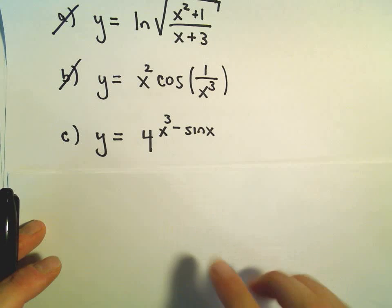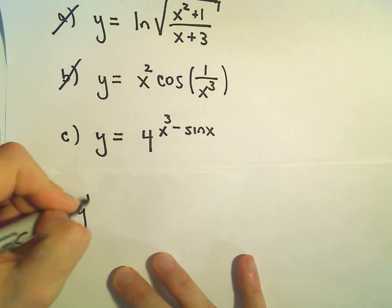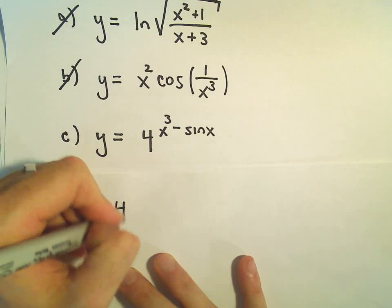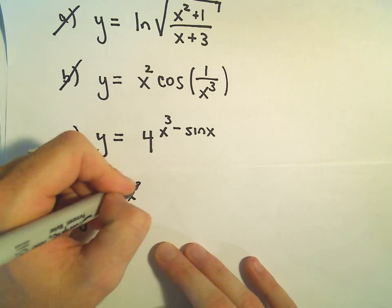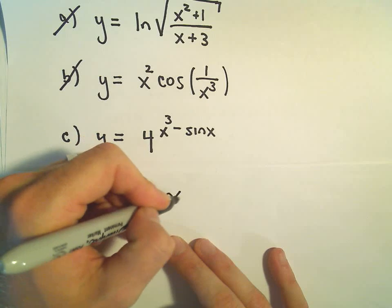So here we're just going to use our a^f(x) derivative formula. And we've seen for these, when you have a number to a function, it just repeats when we take the derivative. So we'll get 4^(x³ - sin x).